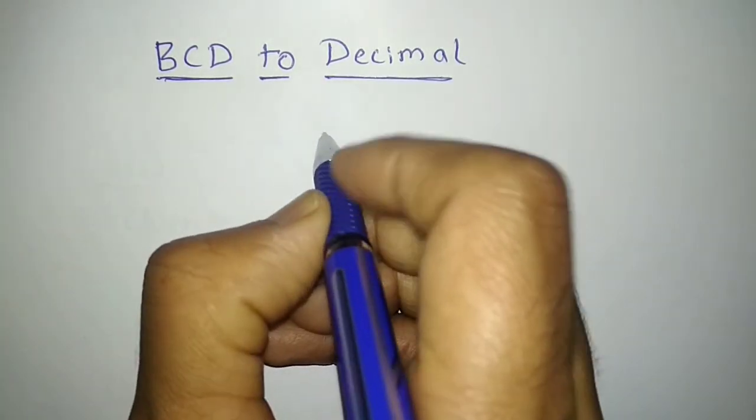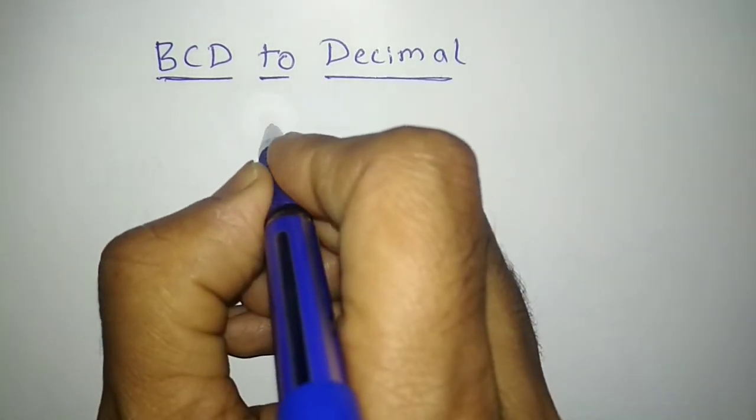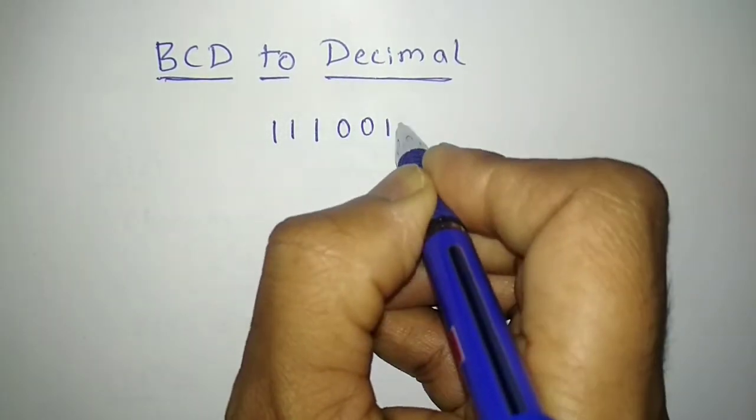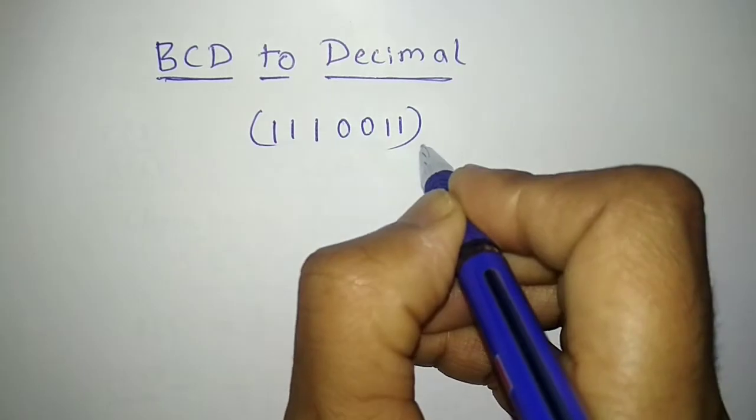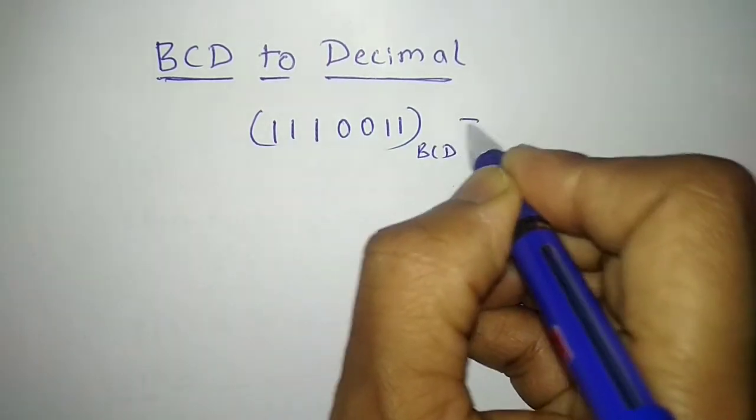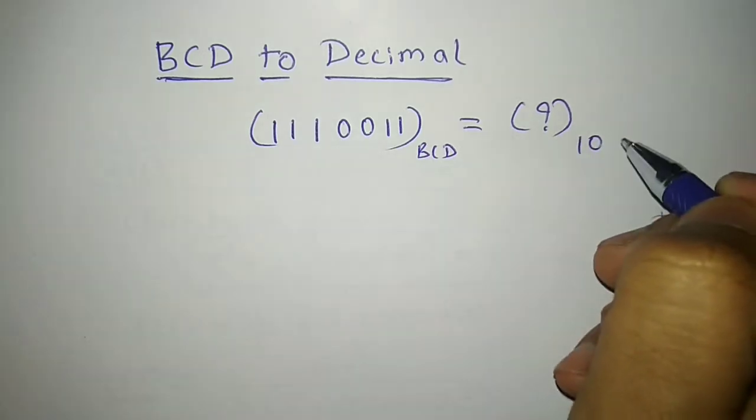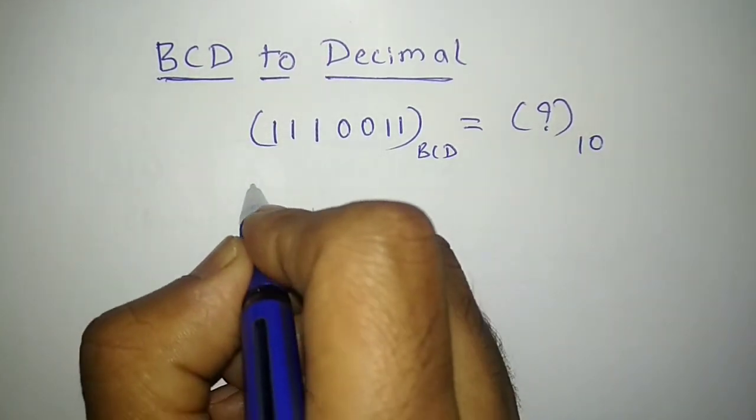So let the number be in decimal is 1110011. So this is the given number in BCD, and I would like to know what is its equivalent in decimal. So how do I do that? So let me write the given BCD number again: 1110011.